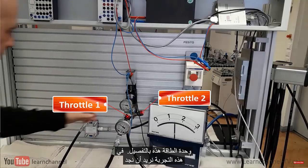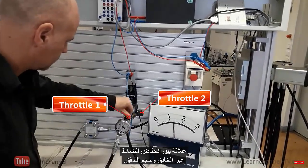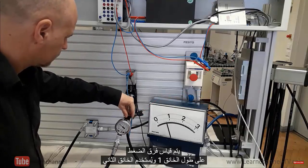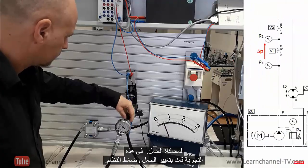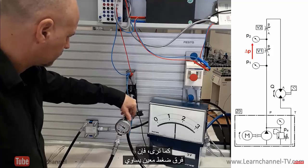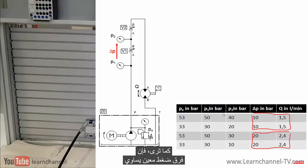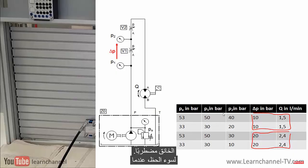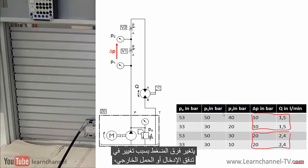In this experiment, we want to find a relationship between the pressure drop across the throttle and the volume flow. The pressure difference is measured along throttle one, and the second throttle is used to simulate a load. We change the load and system pressure. A certain pressure difference equals a certain volume flow. However, the relationship is not linear if the oil flow through a throttle is considered as turbulent. Unfortunately, when the pressure differential changes due to a change in the input flow or external load, the flow rate also changes.